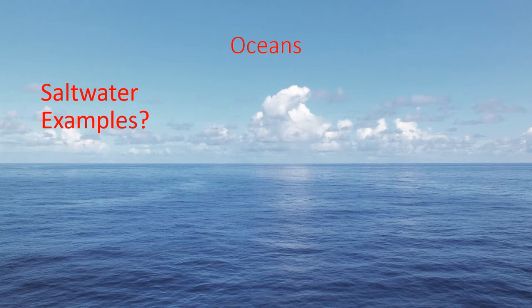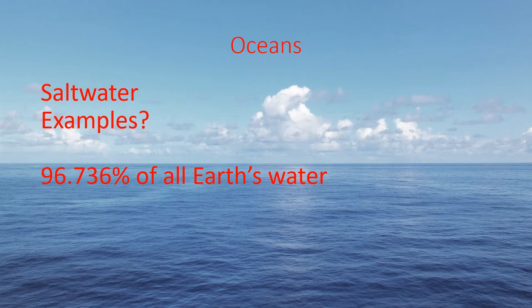Some examples of oceans: there are five on earth. There's the Arctic Ocean towards the North Pole, the Pacific which is off the west coast of the US, the Atlantic off the east coast of the US, the Indian Ocean, and also the Southern Ocean down towards Antarctica. 96.736% of all of Earth's water is found in the oceans, so the vast majority of the water on earth is salt water.